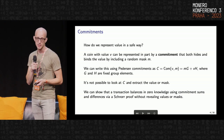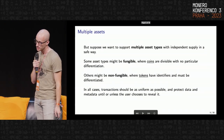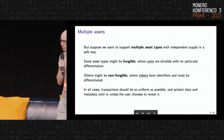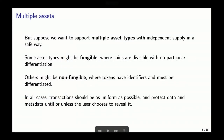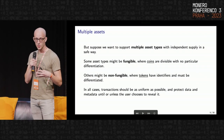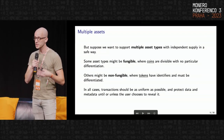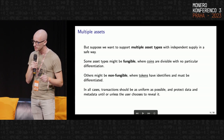But what happens if you want to support multiple asset types with independent supplies in a safe way within a transaction? There were some initial ideas with Bitcoin for this in a paper called Confidential Assets, which had a cool idea but some downsides. In order to get the goals we want, we'll do a bit of a different design.